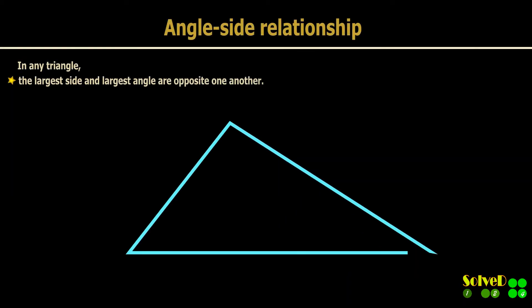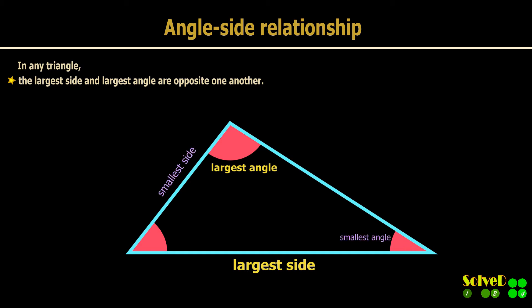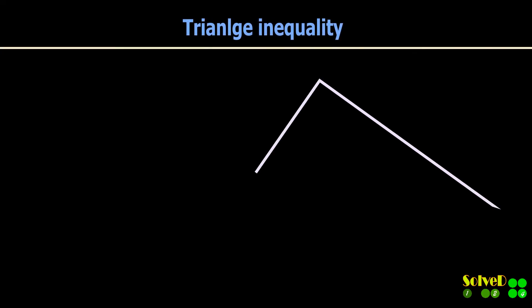In any triangle, the largest side and the largest angle are opposite one another, and the same goes for the smallest and middle-sized angle. The sum of the lengths of any two sides of a triangle is greater than the length of the remaining side.